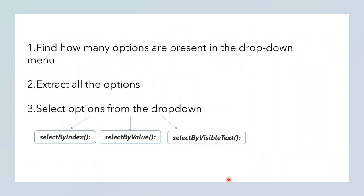When inspecting the drop-down menu, the first thing we will do is find how many options are present. We will extract all those options and then select options from the drop-down menu through three methods: select by index, select by value, and then select by visible text. So just open your IntelliJ IDE first.